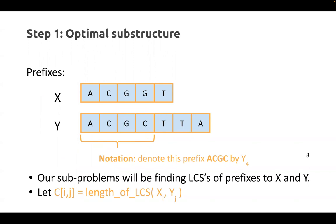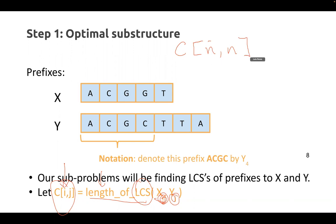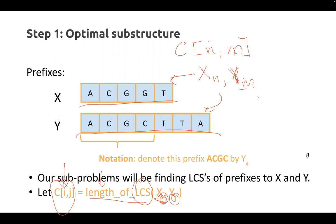Our subproblem is C(i,j), which is going to be the length of the longest common subsequence of X_i and Y_j. C(n,m) is the answer to the longest common subsequence of X_n and Y_m, which really is the answer to our original problem — because X_n is the whole X string and Y_m is the whole Y string. What we just did is define a bunch of smaller subproblems.